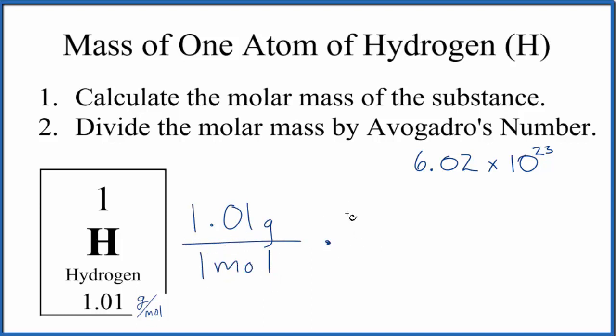We can multiply this by a conversion factor because we know that one mole of anything is going to be 6.02 times 10 to the 23rd particles.